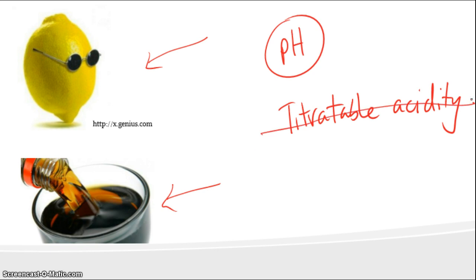We're not going to deal with titratable acidity today. We are going to talk just about pH. They're two slightly different measures and they're both important to many aspects of wine. Today we're just going to define what pH is.